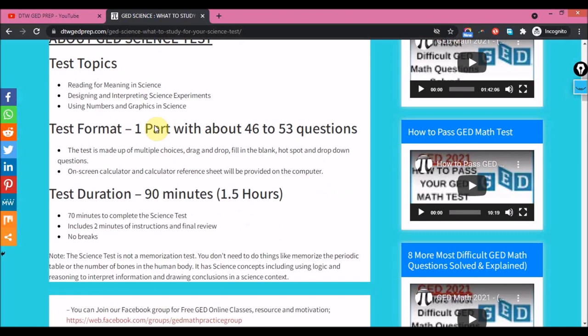So the test format is you just have one part. It's not like the RLA that is divided into several parts. You have multiple choices, drag and drop, fill in the blank. You have, as I said earlier, your calculator. The duration for your Science test is 90 minutes, unlike your RLA which is about two hours plus, because you have an essay part, the reading for comprehension, and the vocabulary section.